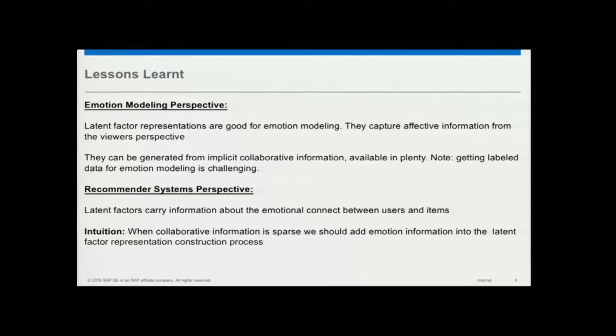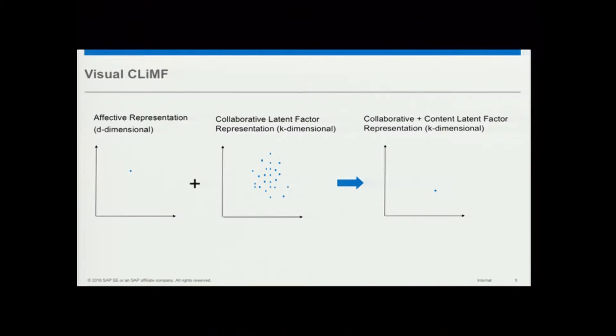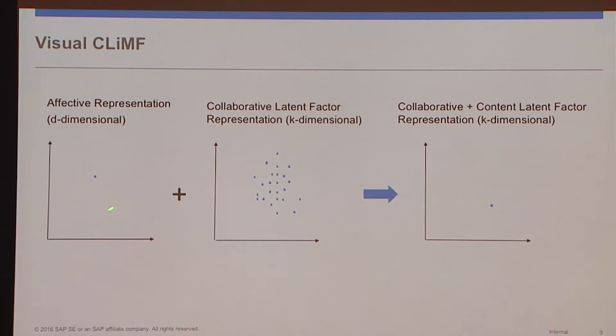The intuition is that when collaborative information is sparse, collaborative filtering methods don't do so well. So we should add emotion information into the latent factor representations. People have used content representations, mostly visual, but what I'm suggesting is that what kind of visual information you put in there is important. The idea for Visual CLIMF is very simple: you take the k-dimensional collaborative information, add the affective representation, and get a collaborative-content representation.